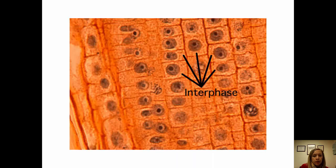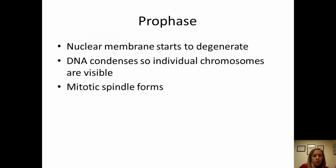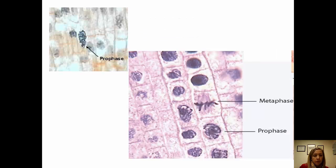Most of the time we see these in onion slides, and most of them are in interphase. In prophase, DNA condenses so you can see chromosomes. Here it is in an onion slide — you can see prophase down here where you can actually see those chromosomes condense and they're scattered all over the place.